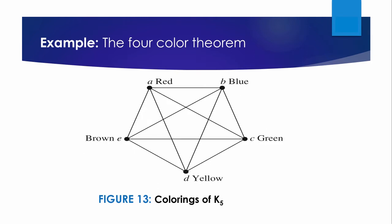What is the chromatic number of Kn? A coloring of Kn can be constructed using N colors by assigning a different color to each vertex. No two vertices can be assigned the same color because every two vertices of Kn are adjacent. So the chromatic number of Kn is N, that is χ(Kn) = N. Recall that Kn is not planar when N ≥ 5, so this result does not contradict the four-color theorem. A coloring of K5 using 5 colors is shown in Figure 13.